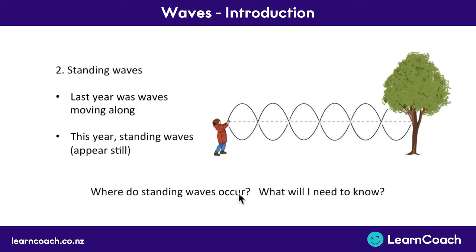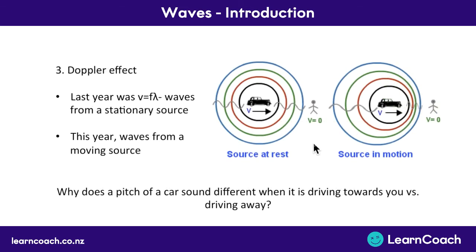The second thing we're going to look at is standing waves. Last year we looked at waves that are moving along. For example, if you tied a rope to a tree and flicked it just one time, you would have seen a wave that travels along the rope. Whereas this year we're going to look at what would happen if you wiggle the rope up and down — it creates this kind of pattern where it looks like the waves are just standing still. We'll cover when standing waves occur and what you need to know about them.